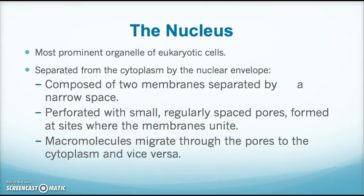The first organelle I'm going to talk about is the nucleus, which is the most prominent organelle of the eukaryotic cell. It has its own membrane called a nuclear envelope, composed of two membranes that separates it from the cytoplasm. Within this structure there are small regularly spaced pores that allow macromolecules to migrate through to the cytoplasm or from the cytoplasm into the nucleus.